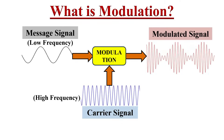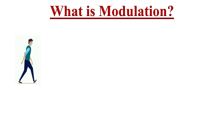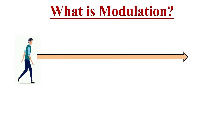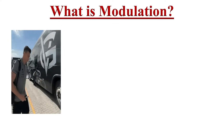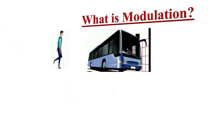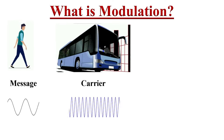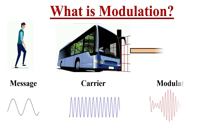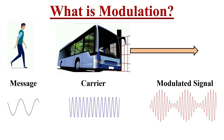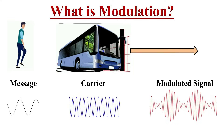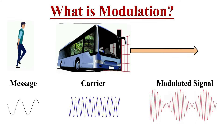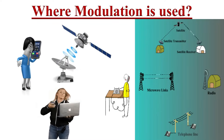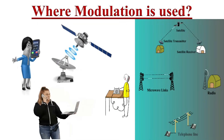This modulation technique can be explained with a simple example. Suppose if we want to travel a far distance, like to another city or state, we will take a mode of transport to reach the destination — for example, a bus. Here the person can be represented as the message signal and the bus as the carrier signal. If the person travels by bus he can reach the destination effectively. Likewise, if we superimpose a low frequency message signal on a high frequency carrier signal, it can be transmitted to far distances effectively.